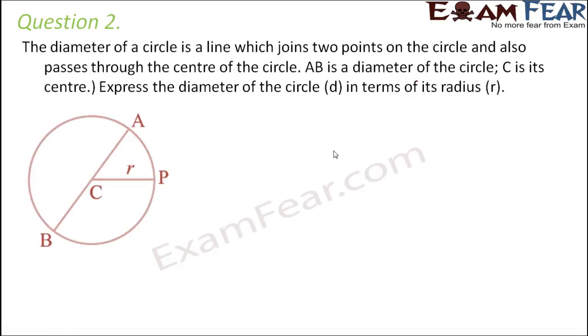Question number 2. The diameter of a circle is a line which joins two points on the circle and also passes through the center of the circle. AB is a diameter of the circle, C is its center. So this line passes through the center and it joins two opposite points A and B. Express the diameter of the circle D in terms of its radius R. So when you look at the relationship between diameter and radius in a circle, we all know that the diameter of a circle is always equal to twice the value of radius. That means 2 times the radius. So we can say that D is equal to 2R. So here D and R are two variables which represent the diameter and the radius.